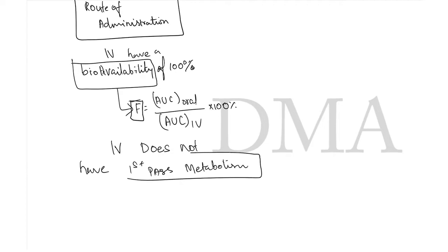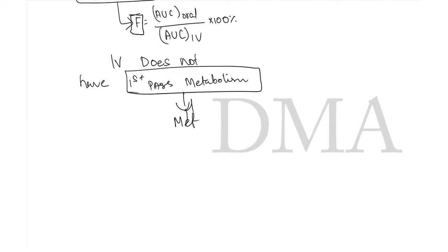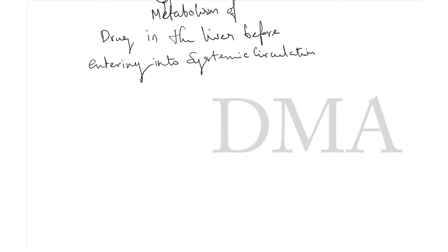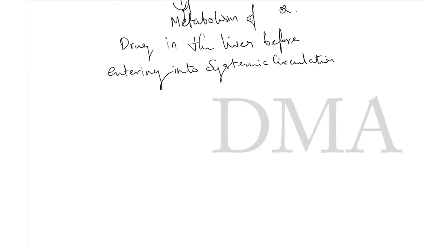First-pass metabolism is the metabolism of a drug in the liver before entering into systemic circulation. Bioavailability is indicated by the letter F, where F equals the area under the curve of oral divided by area under the curve of IV, multiplied by 100%.